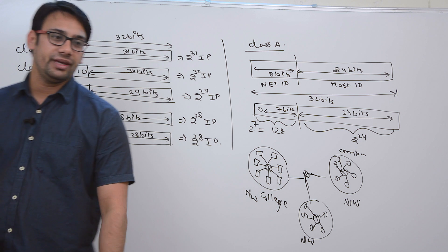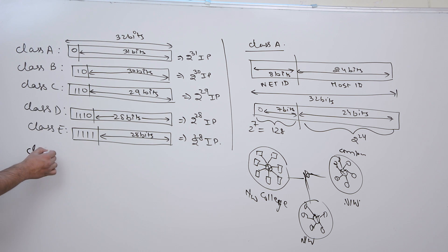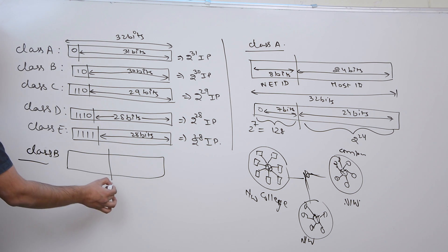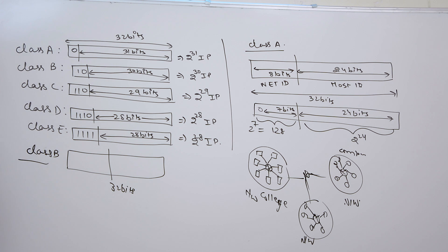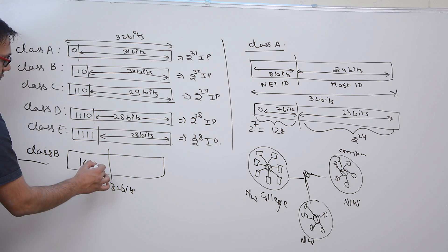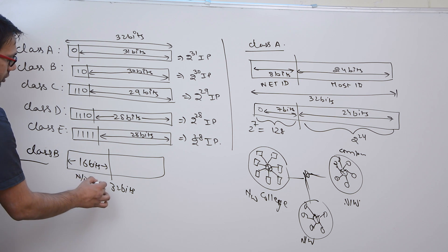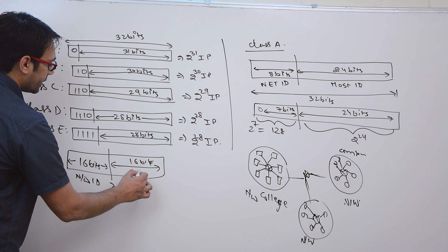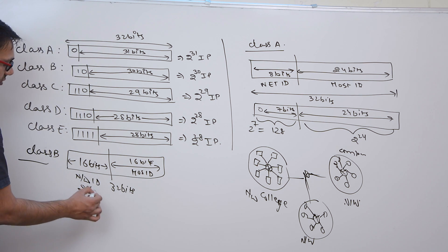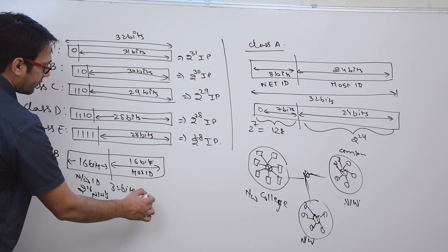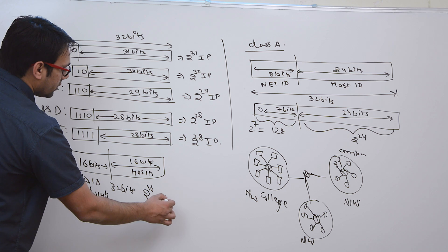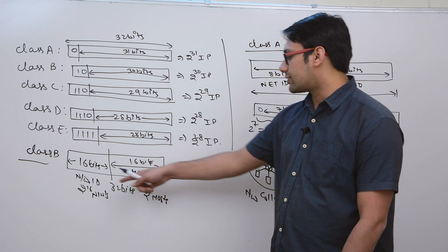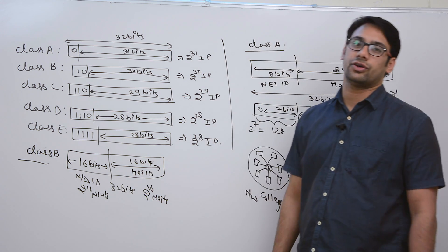When we discuss the class B IP address, out of total 32 bits, 16 bits are used for the network ID and the rest 16 bits are used for the host ID. That means we can have 2 raised to power 16 networks and in every network we can have 2 raised to power 16 hosts, which is roughly around 64,000 networks and 64,000 hosts in every network.